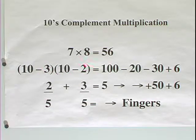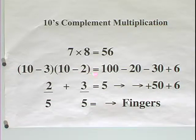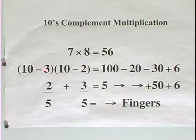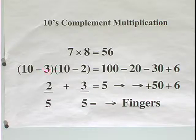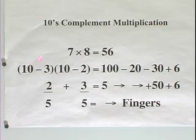Let's do the binomial multiplication now. 10 times 10 is 100, 10 times minus 2 is minus 20, minus 3 times 10 is minus 30, minus 3 times minus 2 is plus 6. So if we multiply, these will be open fingers — 3 of them when it's a 7 and 2 of them when it's an 8. So 3 times 2 is 6. We get this plus 6, the ones place.